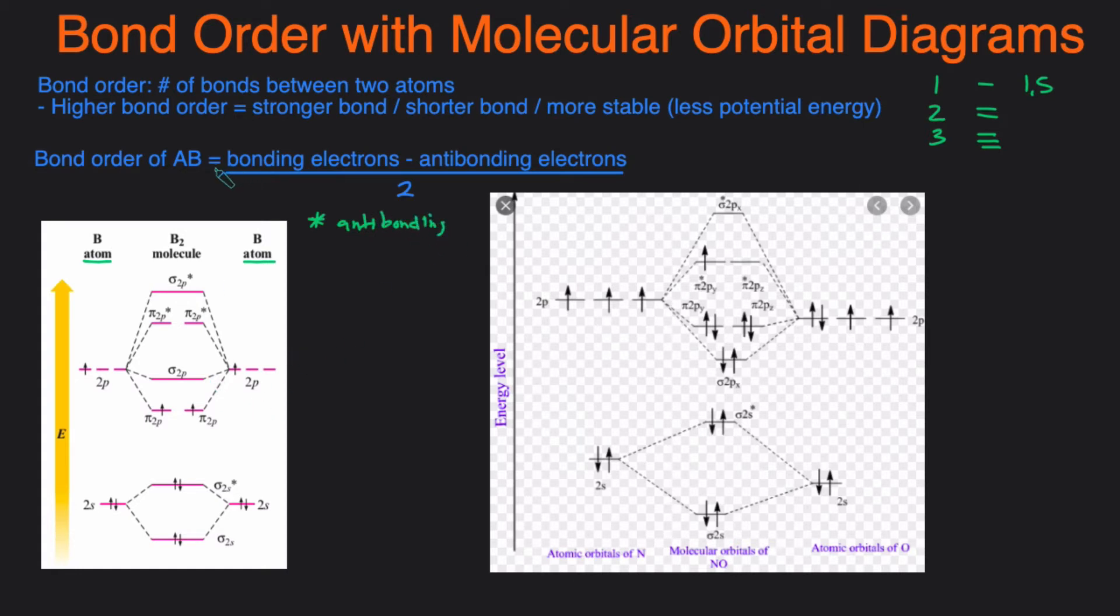So knowing that we can now use this formula to calculate the bond order between the B2 molecules. So let's start with the number of bonding electrons. That will just be one, two, three, four.